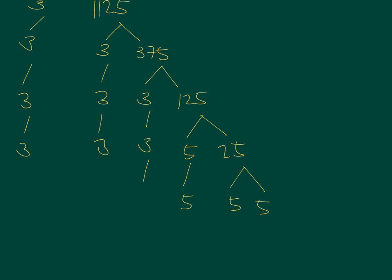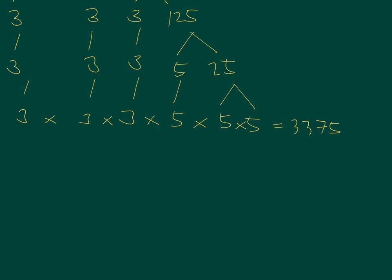So we bring down all the other numbers, 3 and 3. So if you multiply all of this, then you will get the number 3375. But our goal is to find the cube root of 3375. That means we have to take the cube root.